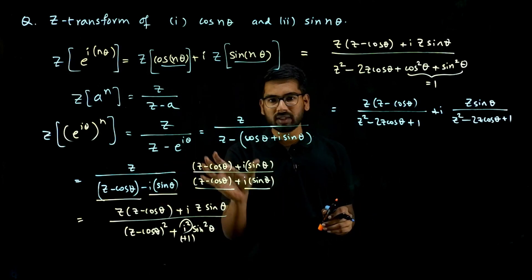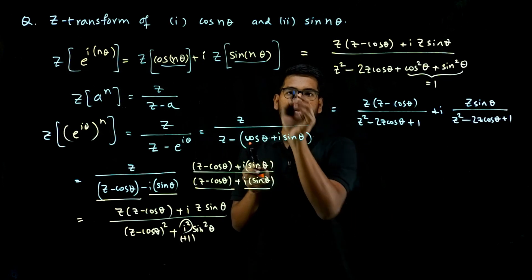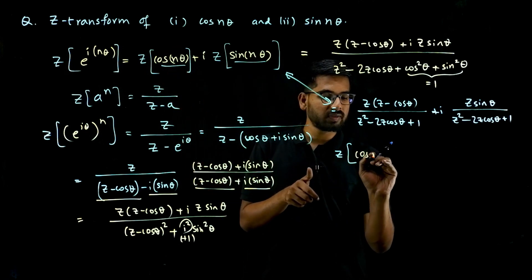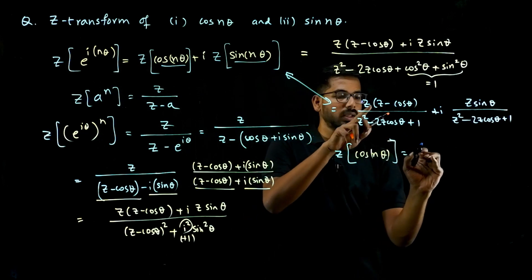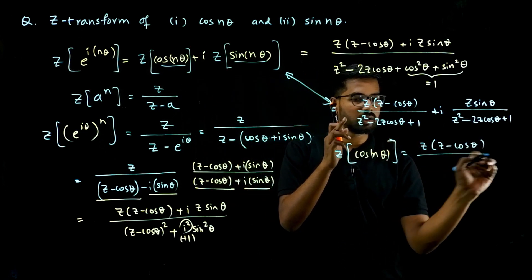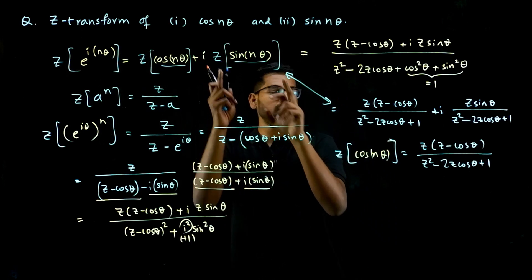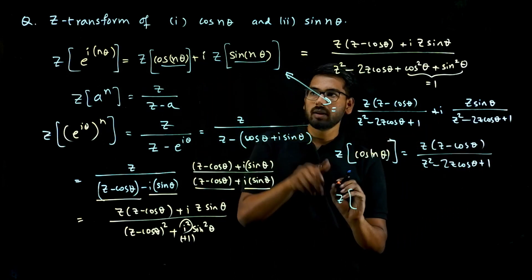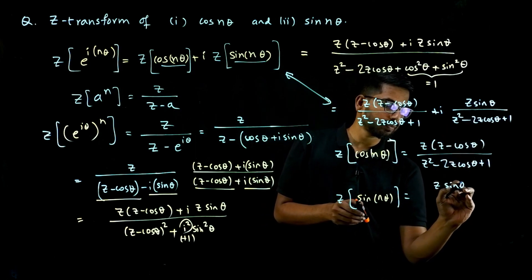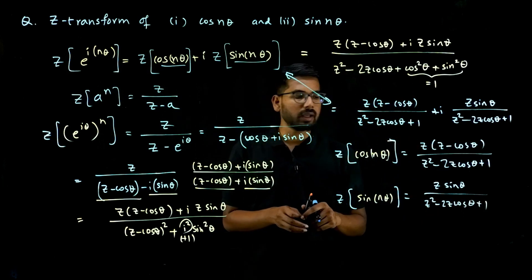Comparing real parts and imaginary parts on both sides: Z{cos(nθ)} equals z(z minus cos(θ)) over (z² minus 2z·cos(θ) plus 1), and Z{sin(nθ)} equals z·sin(θ) over (z² minus 2z·cos(θ) plus 1). The denominators of both transforms are the same — only the numerator changes.